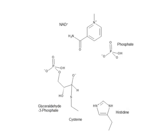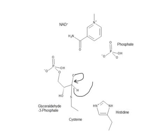Now we have our thioester, which is actually a tetrahedral intermediate. To make a thioester we need to form our double bond back again. Notice that our histidine has become protonated from stealing the cysteine hydrogen. We can make our double bond back to form the thioester intermediate by pushing that pair down from oxygen. Instead of going backwards, we push the H- with its pair of electrons onto NAD, resolving the positive charge on nitrogen. That gives us our thioester — it looks like an ester but with an S in it.